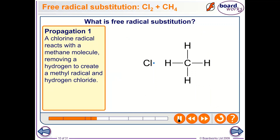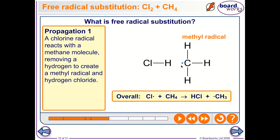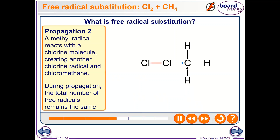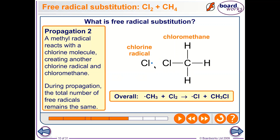Next is propagation. In propagation step 1, a chlorine free radical reacts with a methane molecule, removing a hydrogen atom to give hydrochloric acid (HCl) plus a methyl free radical. In propagation step 2, the methyl free radical reacts with chlorine gas via homolytic fission, producing more chlorine free radicals plus a haloalkane — chloromethane, also called methyl chloride.